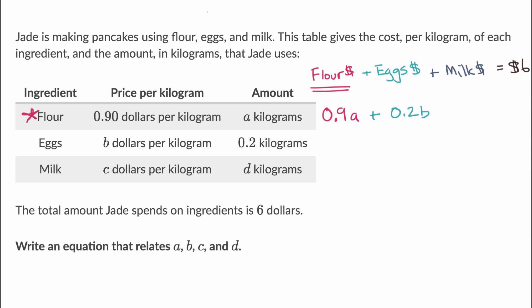And then last but not least, on milk, let me look at the product of these two things, of this and of this. So D kilograms at C dollars per kilogram, that's just going to be CD dollars. So plus CD, and all of that is going to be equal to six dollars.